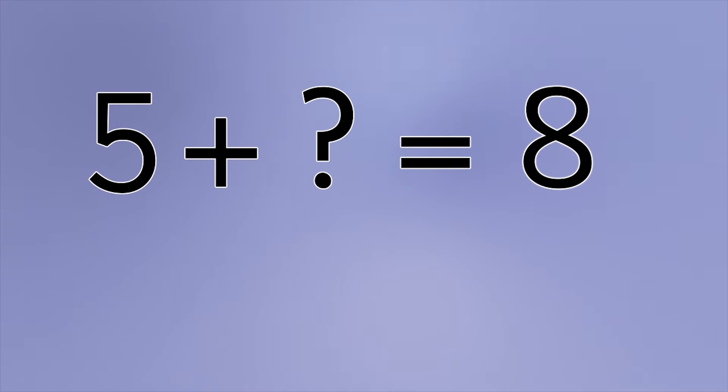We already have the answer, but we only know one part of the question. The other is unknown. Here we have used a question mark. Sometimes a blank box will be used in place of the unknown number.